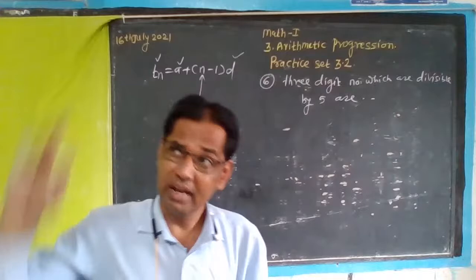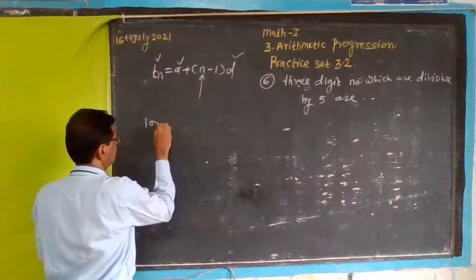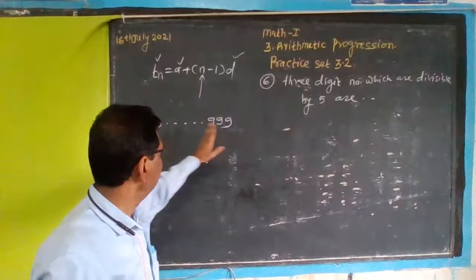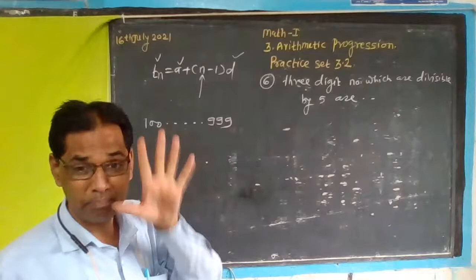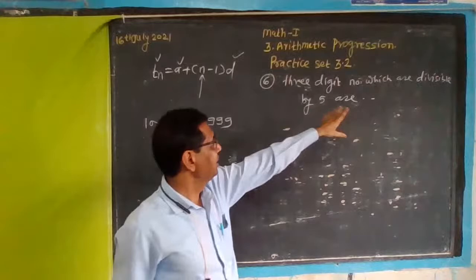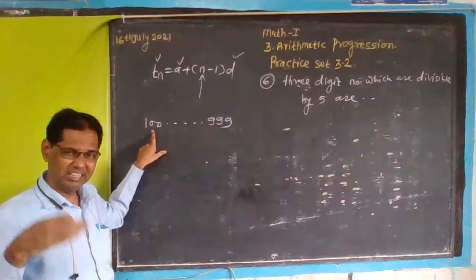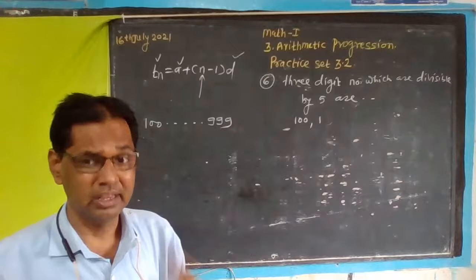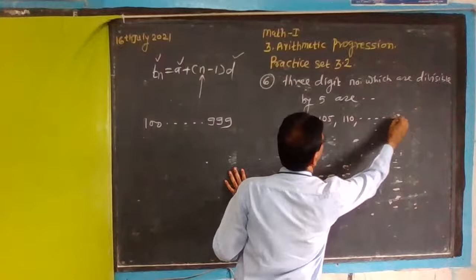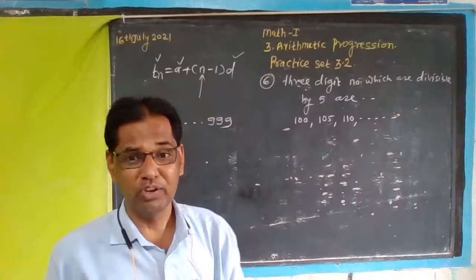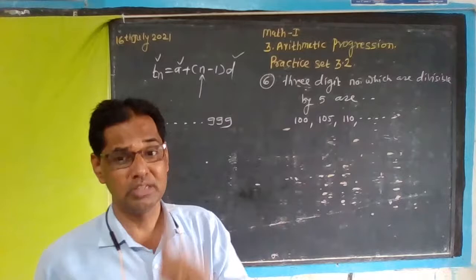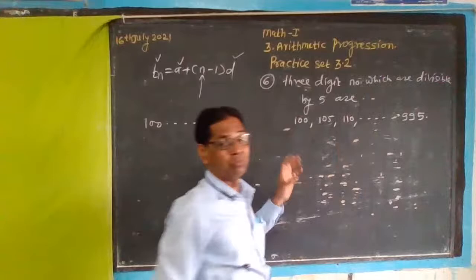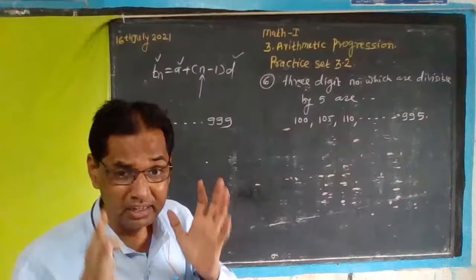Three-digit numbers are 100, 200, 300, and the last three-digit number is 999. Which are divisible by 5? The first one is 100, then 105, 110, and finally the last one divisible by 5 is 995.